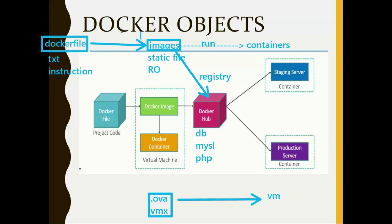From a Dockerfile, when you build it, you get an image. When you run the image, you get a container. This formula you should remember throughout. From a Docker image you can run your own container, or you can store and share it on Docker Hub. From Docker Hub others can pull the image and start a container.